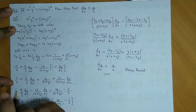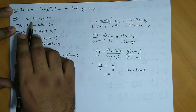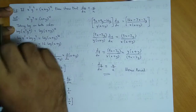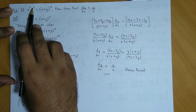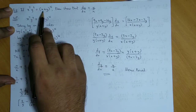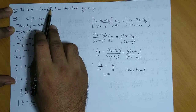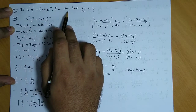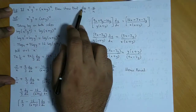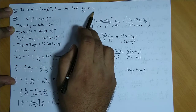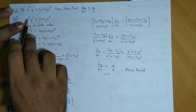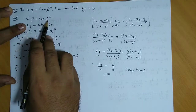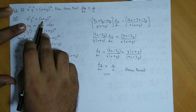Question number two: if x raised to 7 into y raised to 9 is equal to x plus y raised to 16, then show that dy/dx is equal to y upon x. अब यह function हम as it is लिख लेते हैं पहले — अगर हम इसे log से solve करते हैं।